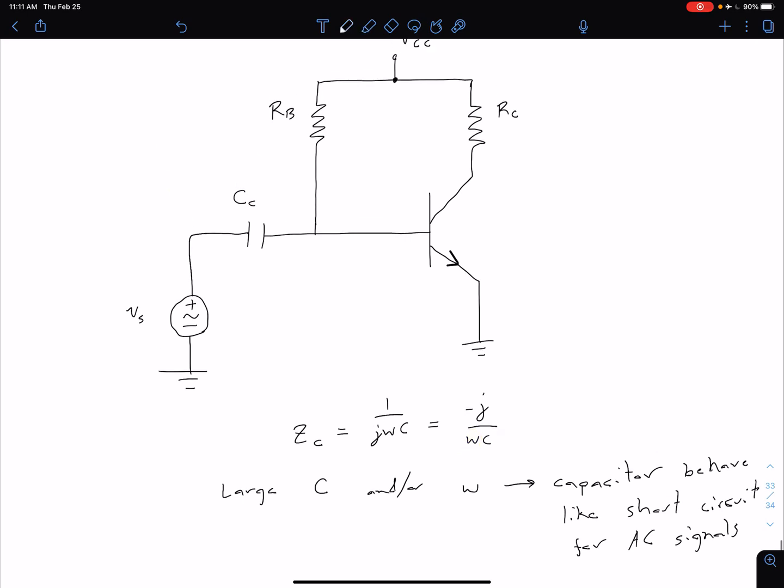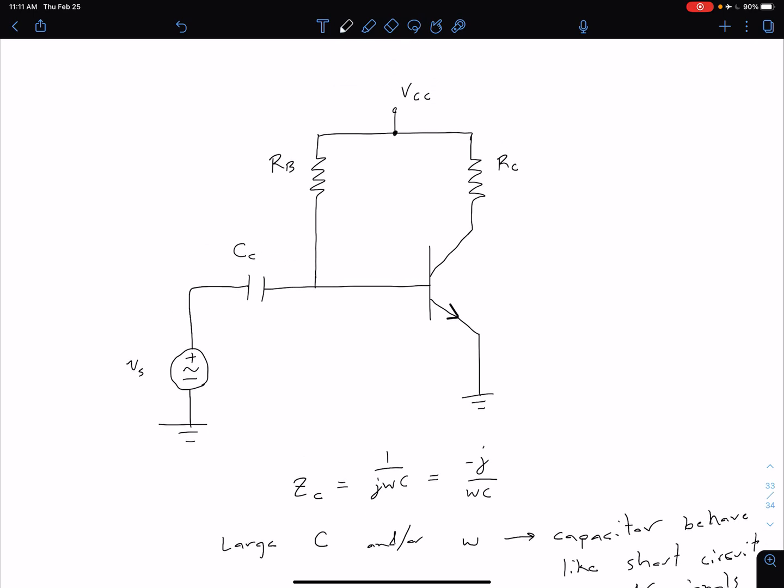What that means is ultimately in our transistor, we're going to have AC and DC parts of each of our currents or voltages.